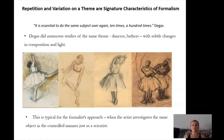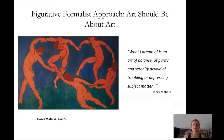Repetition and variation on a theme is a signature characteristic of formalism. For example, Degas was focusing on ballerinas and drawing them multiple, multiple times — basically a scientific exploration of the same subject.